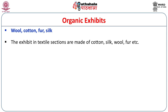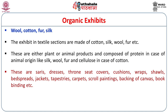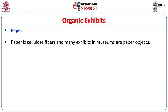In many multipurpose museums or textile museums, you will find many objects made of wool, cotton, fur, and silk — like sarees, dresses, shawls, carpets, and tapestries. These are all made of natural fiber. The textile section commonly exhibits cotton, silk, wool, fur, etc. Among these, cotton is a plant product, while silk, wool, and fur are animal products — composed of protein in the case of animal origin, and cellulose in the case of plant origin. In this way, in museums you will find exhibits made of natural fibers.